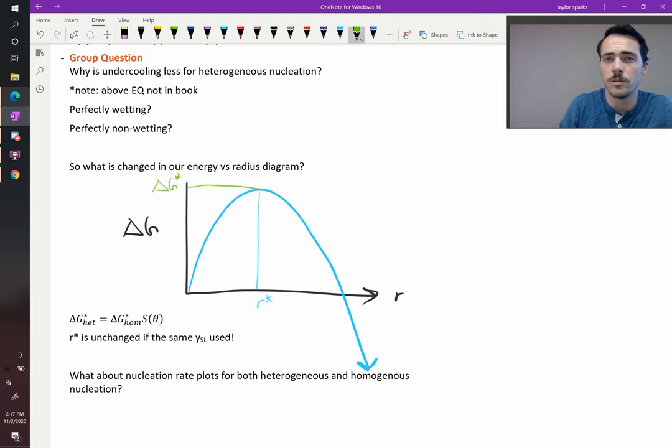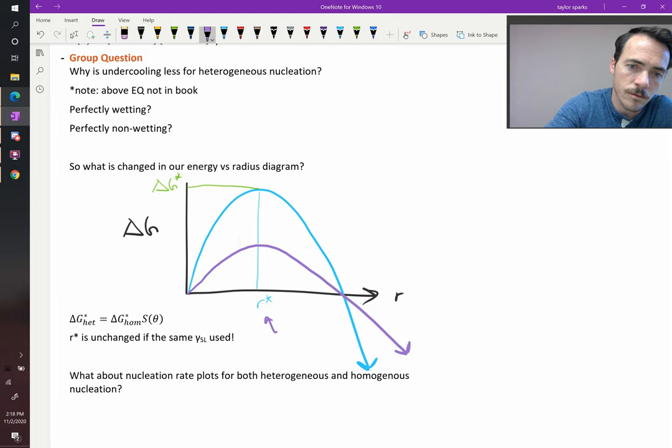But for heterogeneous nucleation, what we see is this. They both exhibit the same exact R star, but look at how different delta G star is, a much lower activation energy.